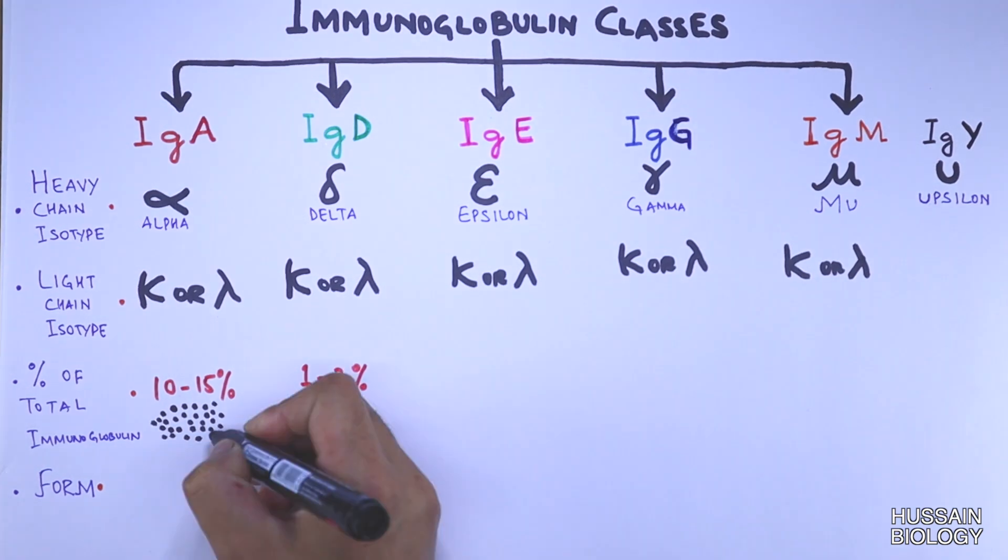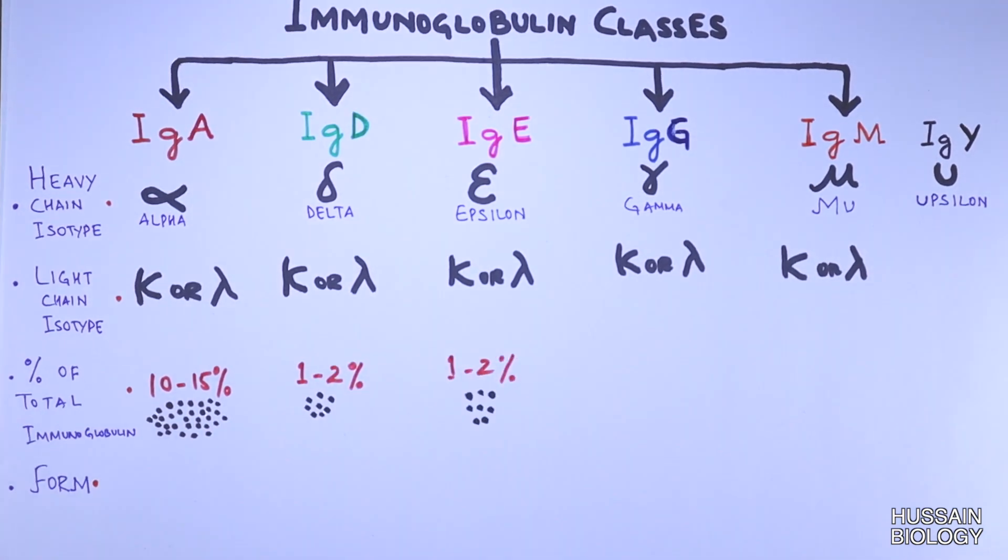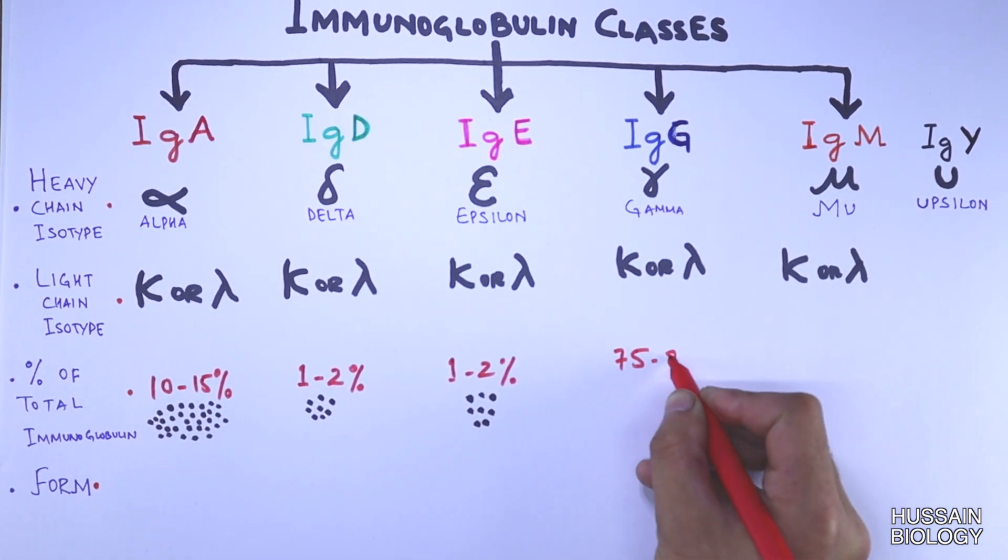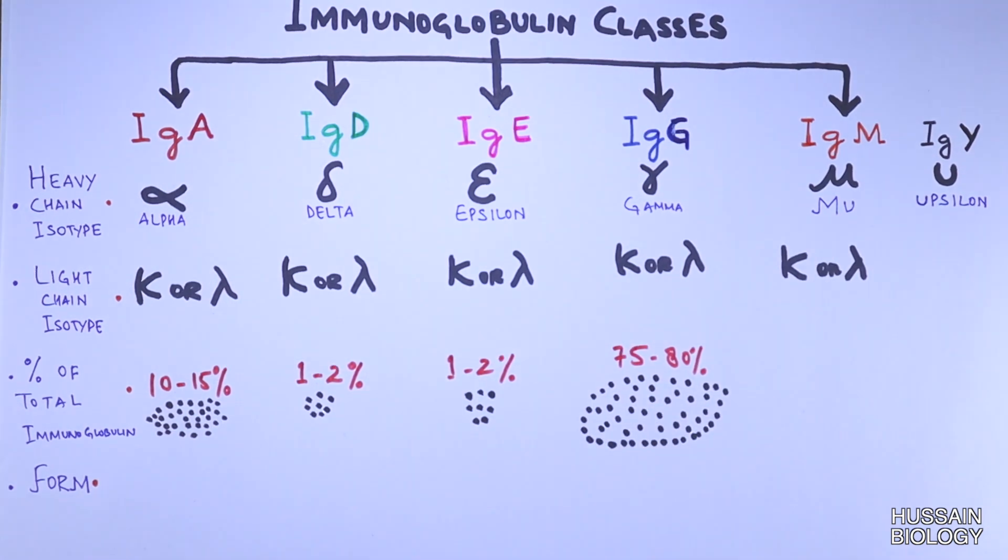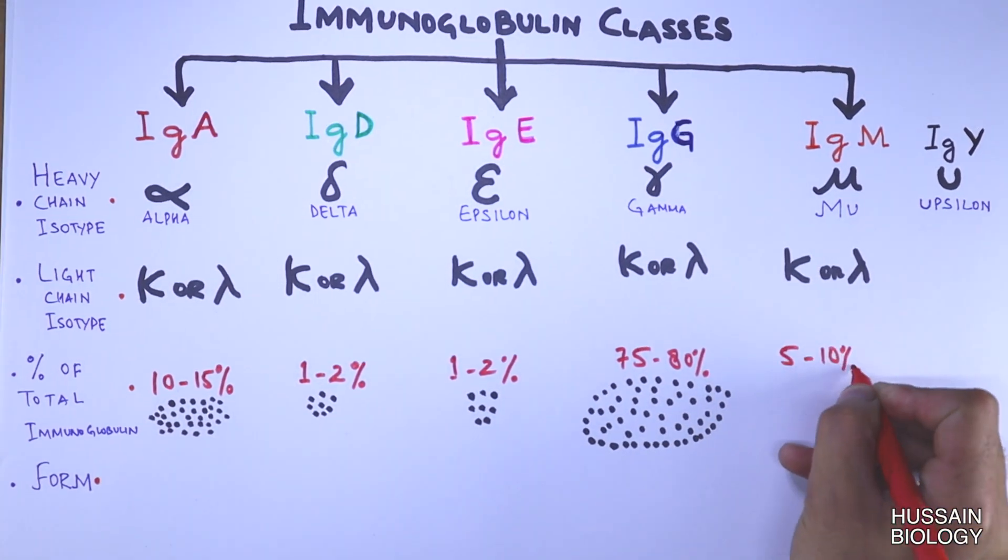IgD and IgE is only 1 to 2 percent of total immunoglobulin present, whereas IgG is most abundant of all and constitutes 75 to 80 percent of total immunoglobulin, whereas IgM is about 5 to 10 percent of total immunoglobulin.